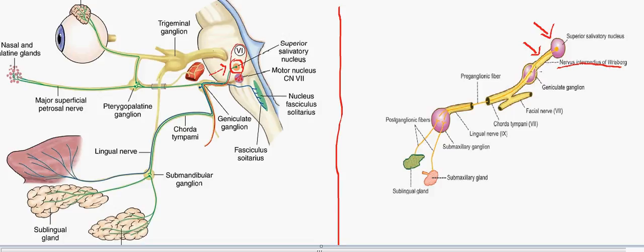From the nervus intermedius of Vriesberg, the preganglionic fibers run towards the geniculate ganglion, which is present in the facial canal of our head. Through the geniculate ganglion, the preganglionic fibers pass towards the main channel of the facial nerve, then leave through the chorda tympani — also a branch of the facial nerve — and from there reach the lingual nerve, which ultimately leads to the submaxillary ganglion. That is where the preganglionic fibers end.